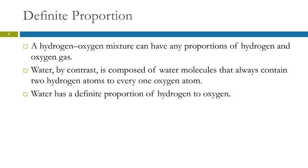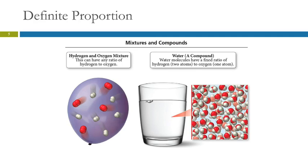So here we have an illustration, a balloon containing two different gases, oxygen and hydrogen gases. You could have a lot of one and a little of the other, or equal amounts. It could be different, different proportions.